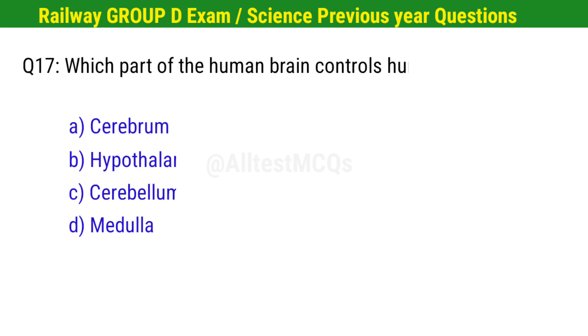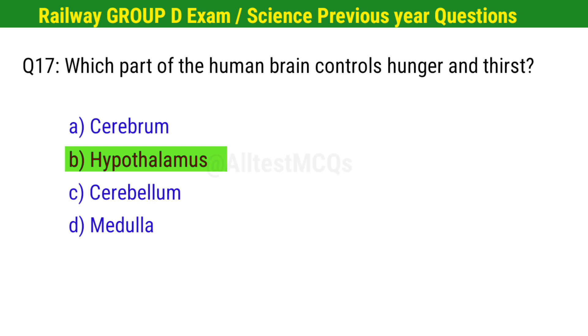Question No. 17. Which part of the human brain controls hunger and thirst? Right option is B. Hypothalamus.